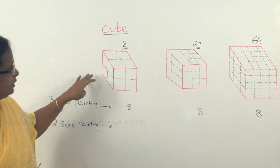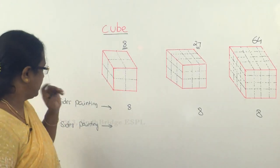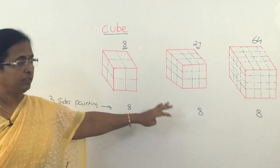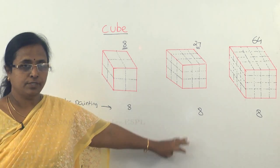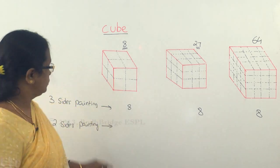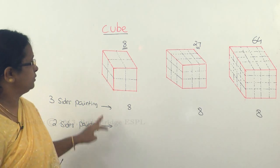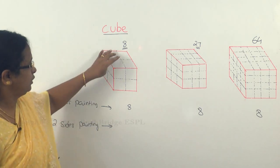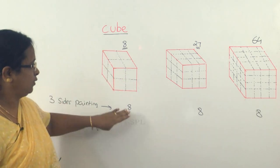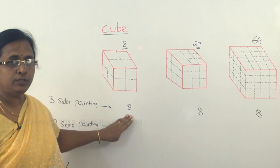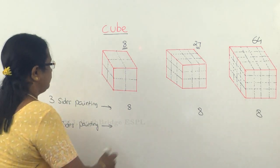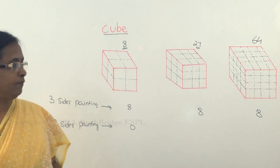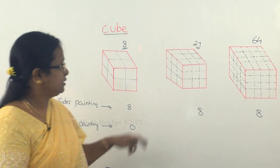Now we are going to see for the two-sided painting. As you have seen, for every cube it's going to be only eight of the smaller cubes that have three-sided painting. For the first case of eight smaller cubes, since all eight are three-sided painted, two-sided painting will be zero — you will not have any.